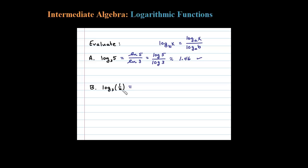In any case, let's use the change of base. So we would take the log of the argument, 1/2, and divide that by the log of the old base, 3. On a calculator I get negative 0.63.